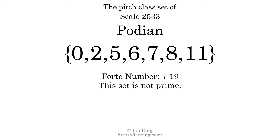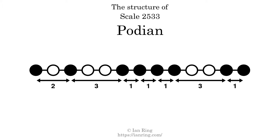The Forte class is 7-19. This set is not prime. The structure of a scale is a description of the interval distance between each successive tone. This scale has a structure of 2, 3, 1, 1, 1, 3, 1.